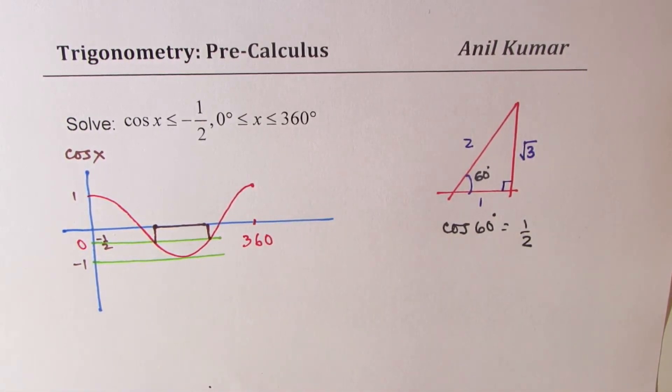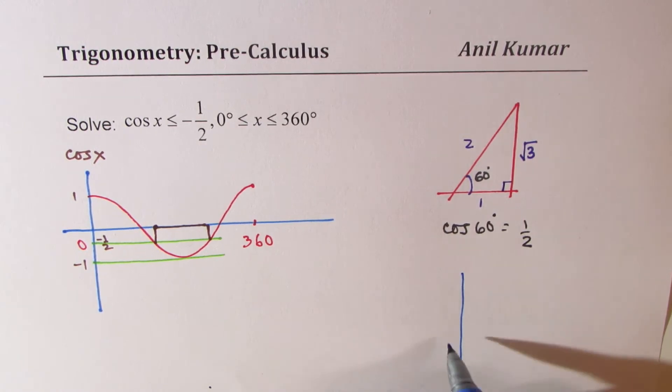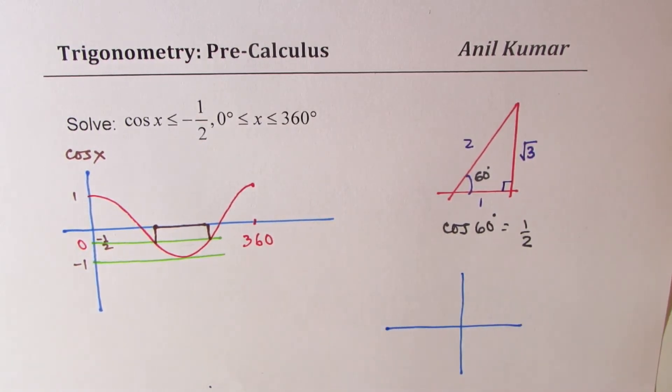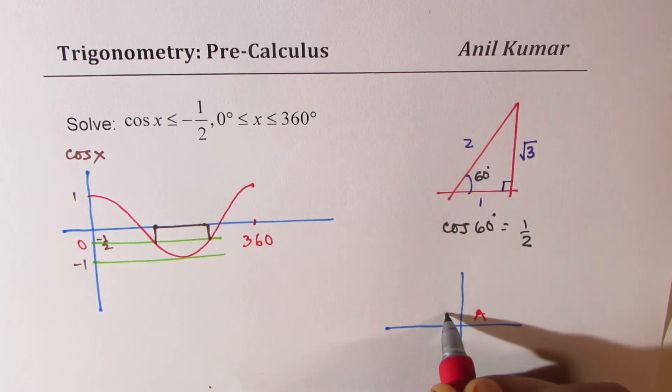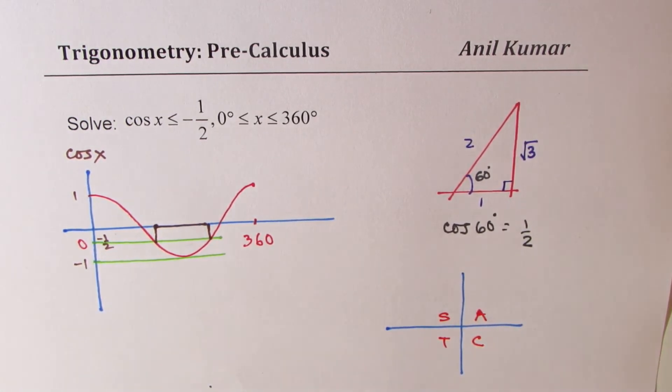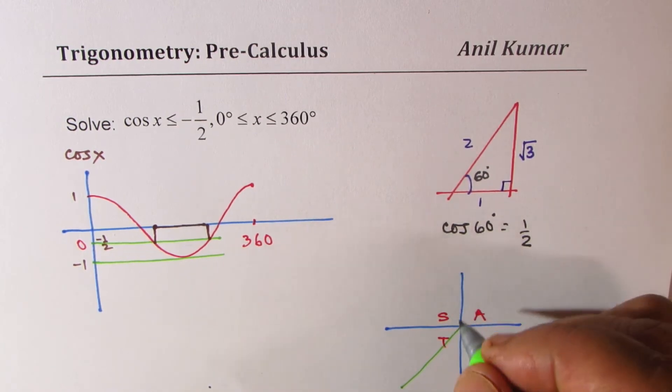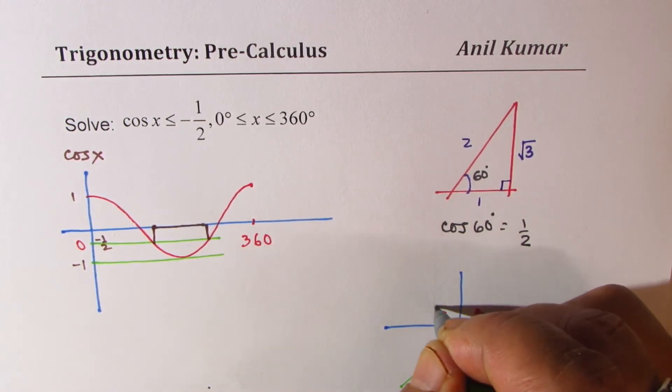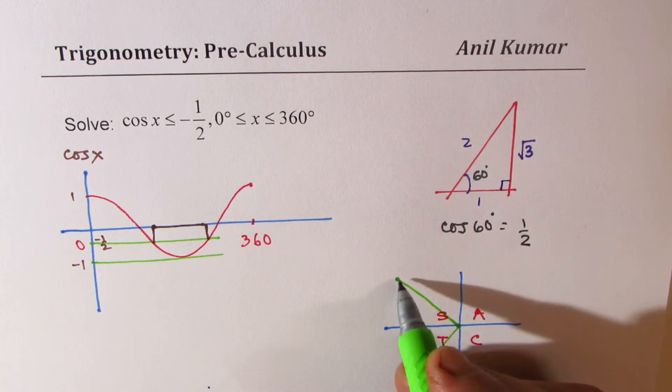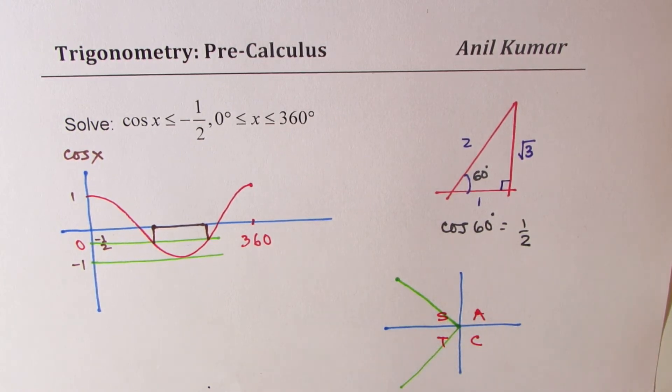Since it is negative, it really means that we are in quadrant 2 and 3. That is the rule: all are positive here, sine, tan, and cosine. So cos is negative in quadrant 2 and 3. We are looking for these two values. At these two values, cos is negative.